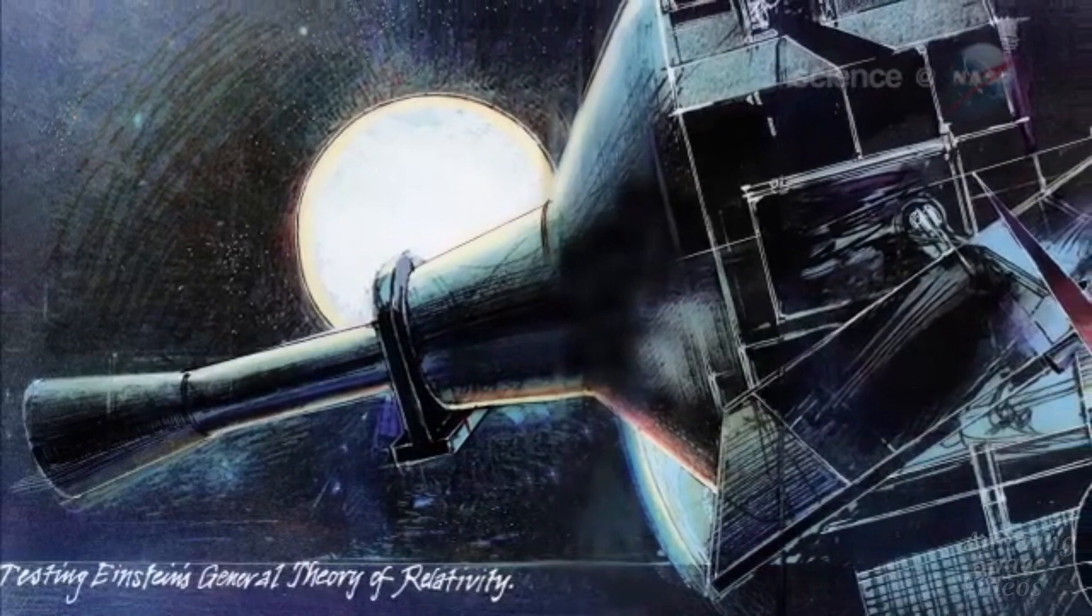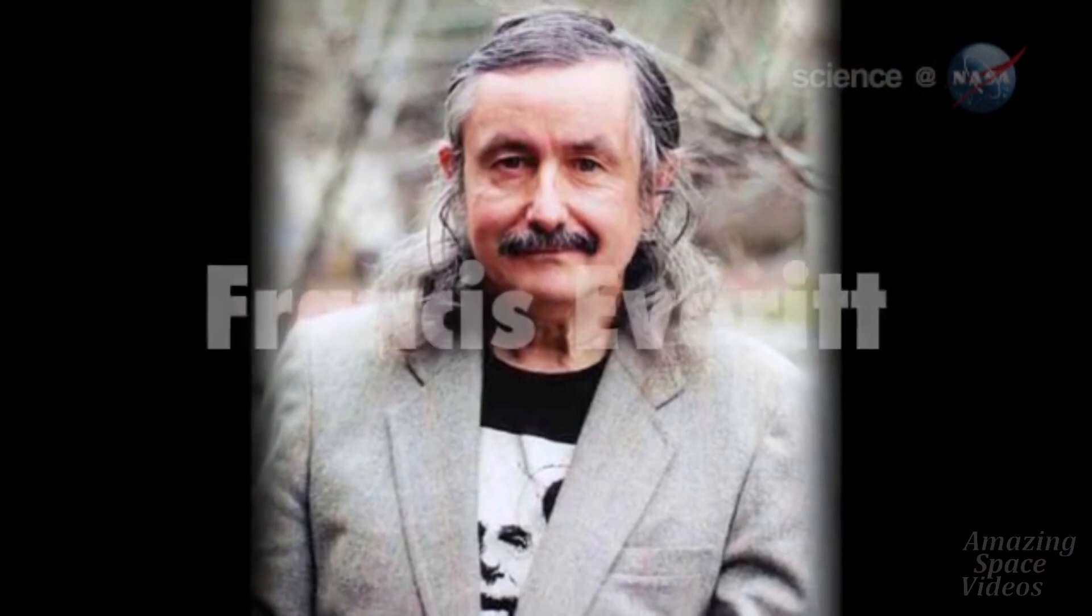The space-time around Earth appears to be distorted, just as general relativity predicts, says Stanford University physicist Francis Everett, principal investigator of the Gravity Probe B mission.